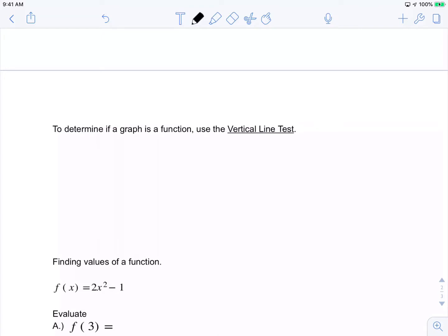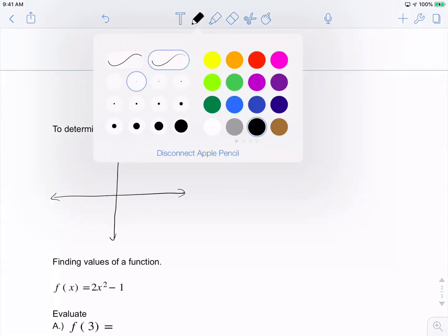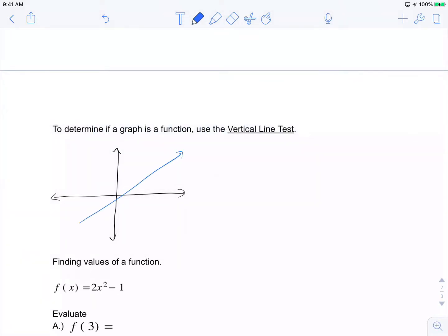To determine if a graph is a function, we'll use the vertical line test. If I had some blue line and used this red line to test it, I could slide it along. Would it ever hit at more than one point? If I move that red line, how many times does it cross the blue line? It only hits it once. Because of that, this is a function. It passes the vertical line test.